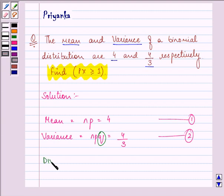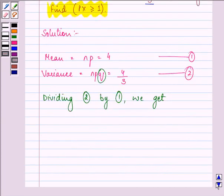So dividing the second equation by the first equation, we get npq upon np equal to 4/3 divided by 4.